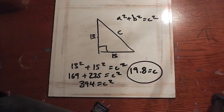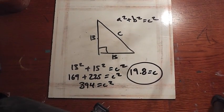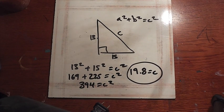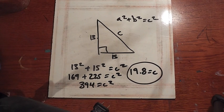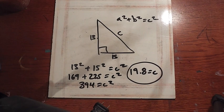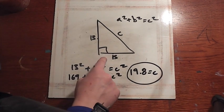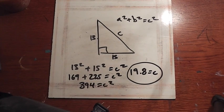That equals C, and that right there is your hypotenuse. You're wondering when you're ever going to use this — this is a frequently asked question in math. Usually it's people who aren't very good at it and think it's absolutely ridiculous, but you actually do have to use this in real life, and I'm going to give a real-life example.